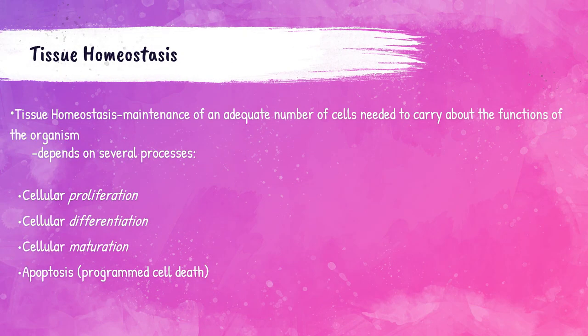Hematopoiesis is the lifelong process of continuous formation and turnover of blood cells to meet everyday demands, as well as to respond to increased demand due to injury or infections. This process results in the formation, development, and specialization of every blood cell released into the peripheral blood from the bone marrow, and it depends on several things: cellular proliferation, differentiation, maturation, and apoptosis.